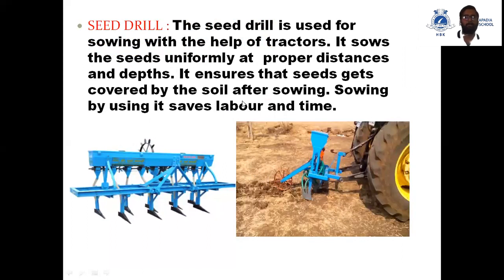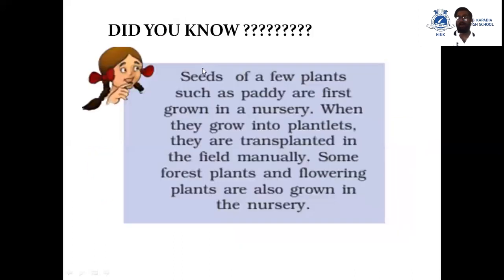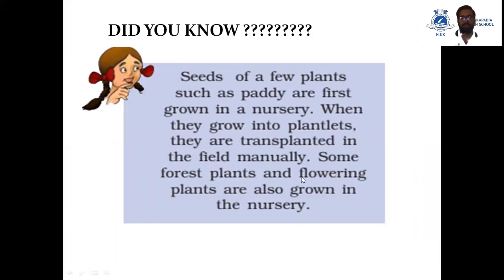The seed drill is a modern tool. The seed drill is used for sowing with the help of tractors. It sows the seeds uniformly at proper distance and depth. It ensures that seeds get covered by the soil after sowing. Sowing using a seed drill saves labor and time. Interesting fact: seeds of a few plants such as paddy are first grown in a nursery. When they grow into plantlets, they are transplanted in the field manually. Some forest plants and flowering plants are also grown in the nursery.